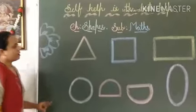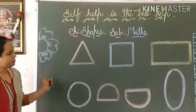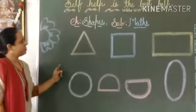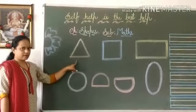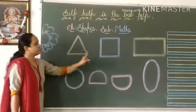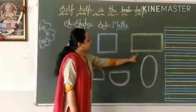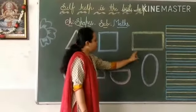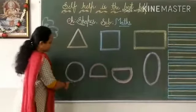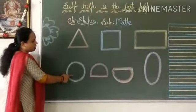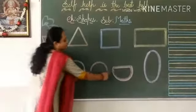Now all shapes — repeat with me: triangle, square, rectangle, circle, semi-circle, oval.